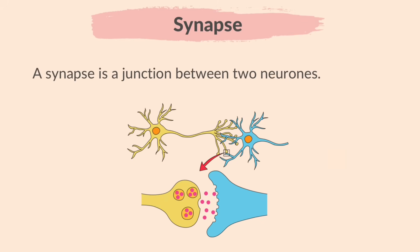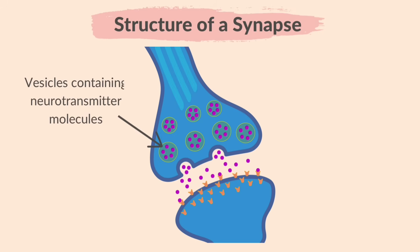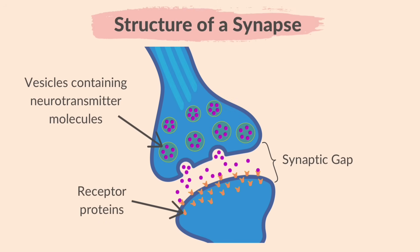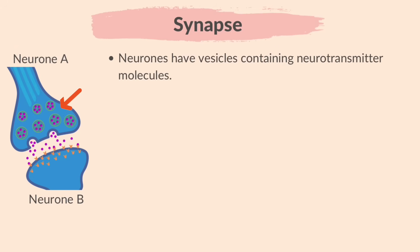Next, synapses. A synapse is a junction between two neurons. Neurons never touch each other, so they have gaps in between them called synapses. Let's look at the structure of a synapse. These are vesicles containing neurotransmitter molecules, this is the synaptic gap, and these are receptor proteins. Neurotransmitters are chemical messengers, so this is the only part of the nervous system where messages are chemical instead of electrical.